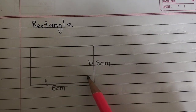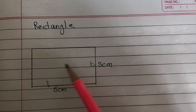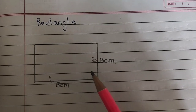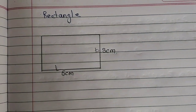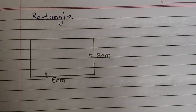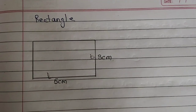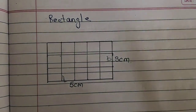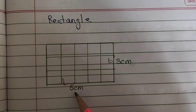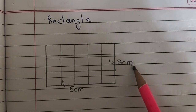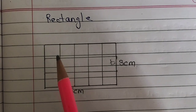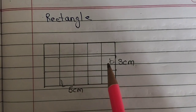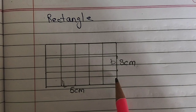If we want to find the area of this rectangle, we can use two methods: one is by counting the squares, and the other is by using a formula. First we will learn about counting the squares. In this rectangle of length 5 cm and breadth 3 cm, we count the squares: 1, 2, 3, 4, 5, 6, 7, 8, 9, 10, 11, 12, 13, 14, and 15.